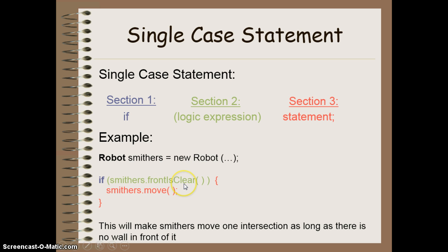Specifically, this front is clear method will tell me whether or not there is a wall or another such object that prevents the robot from entering the intersection it's facing. If it's true, it means that I can get into that intersection. And if it is true, then I run the code Smithers.move. So this block of code here will make Smithers move forward only if there is no wall or other object in front of it that prevents it's moving into that intersection.